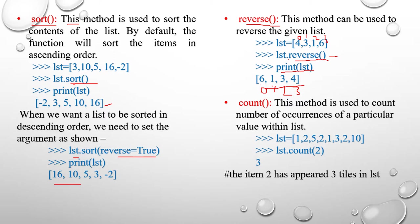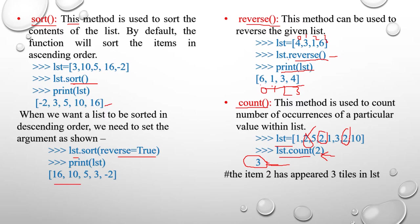Let's consider another built-in function: count. This method is used to count the number of occurrences of a particular value within a list. For example, take LST equal to 1, 2, 5, 2, 1, 3, 2, 10. Here I am invoking the count function and passing the value 2. The number 2 has three occurrences in the list — the first, second, and third occurrence. So the Python interpreter will print 3. The item 2 has appeared 3 times in the list.